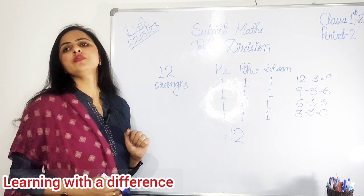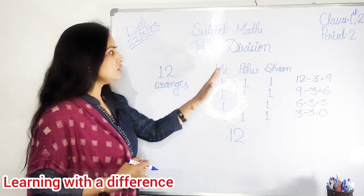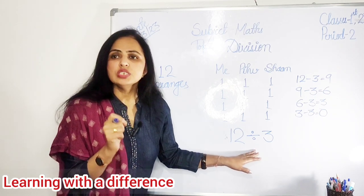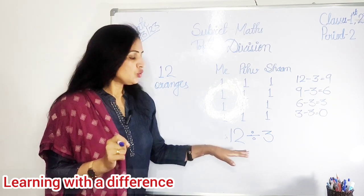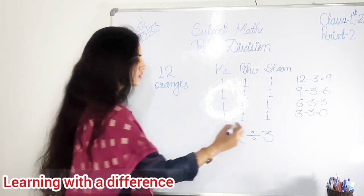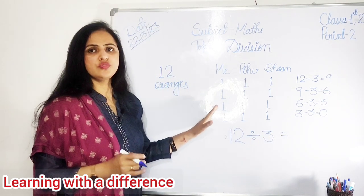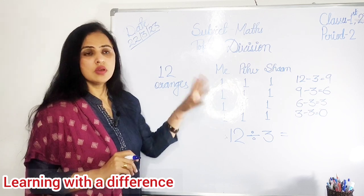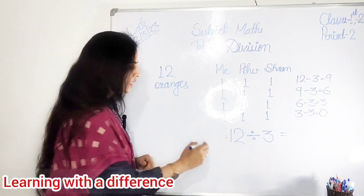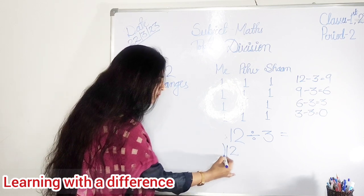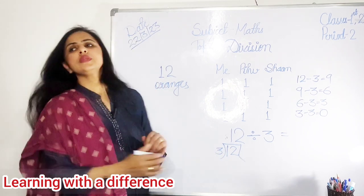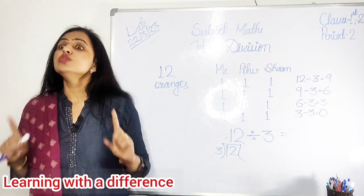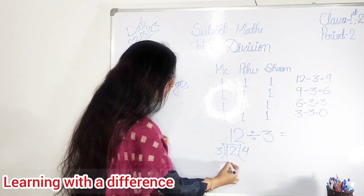Speak after ma'am. Twelve. So kitne persons mein divide karna the? One, two, three. Three persons mein hume divide karna the. So three se hume - yeh hota hai division ka sign, division ka symbol. Twelve ko hamne three se divide kiya. So how many times we got equal oranges? One time, two time, three time, four time. Four times. So when we divide twelve by three, table of three - three ones are three, three twos are six, three threes are nine, three fours are twelve. So three fours are twelve.